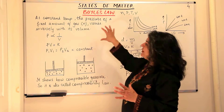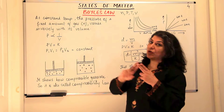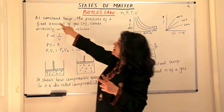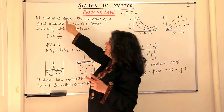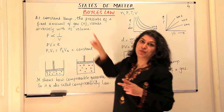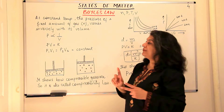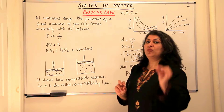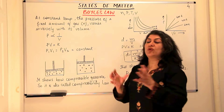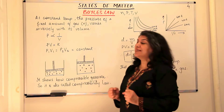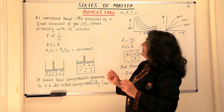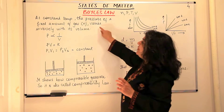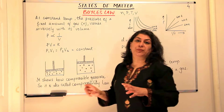If you look at the statement, there are two things that are kept constant out of these four properties: the first is temperature and the other is the number of moles. So when you have a fixed temperature and a fixed number of moles of a gas, the pressure varies inversely with its volume.